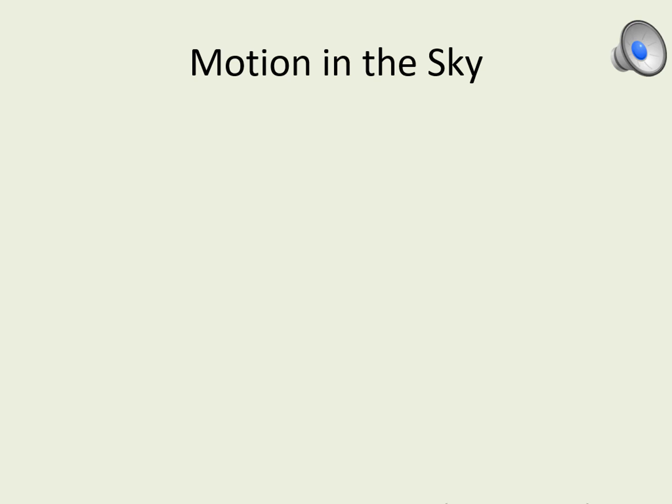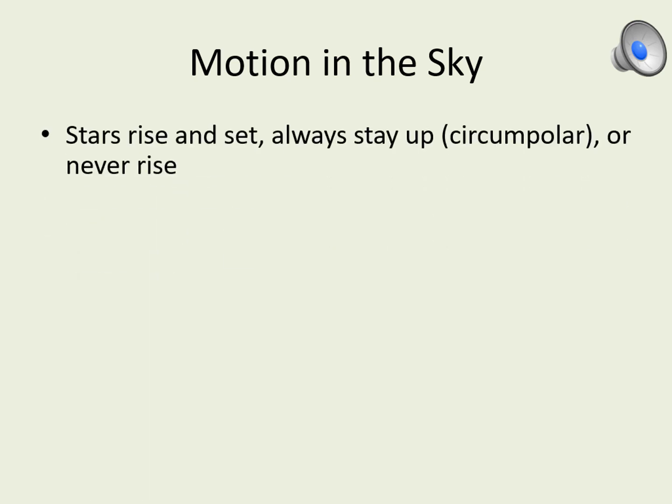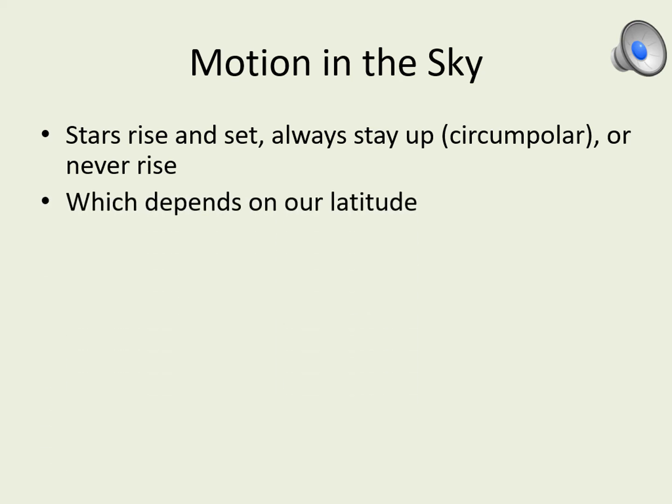As the Earth spins, some stars rise and set in our sky. Others stay up all the time — we call these stars circumpolar. Still others never appear in our sky; they remain hidden below our southern horizon. The set of stars that fits into each of these categories depends on where we are on the Earth. As we change our latitude, the way stars appear to move in our sky changes.